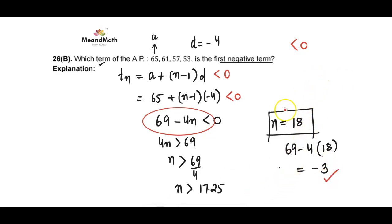Let's check one more thing. If you have any doubt because it was 17.25, maybe 17 could be the value? Let's see. If you substitute 17: 69 take away 4 times 17. If you simplify, you get 1. So 1 is positive, that means 17 can't be the value. Your answer is 18.